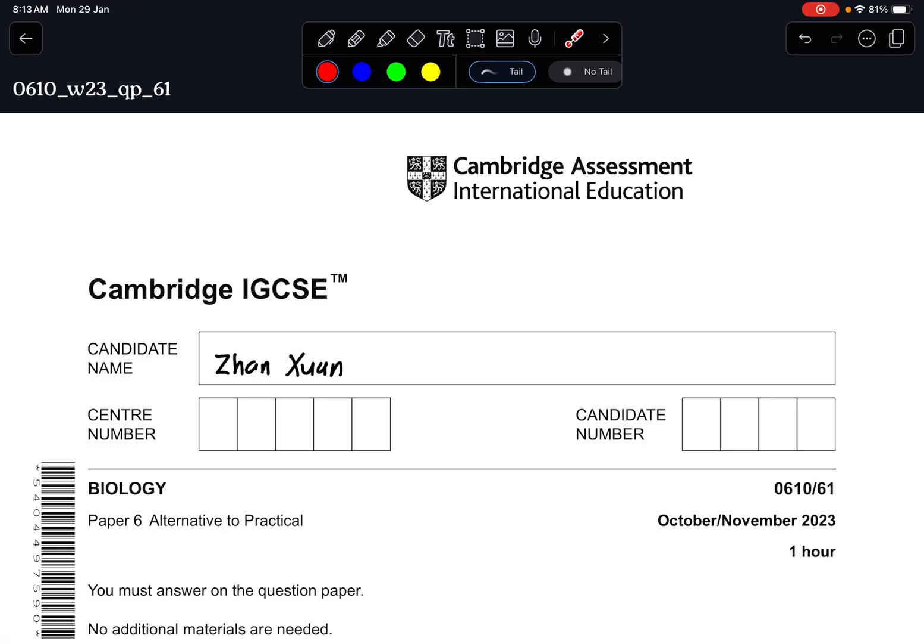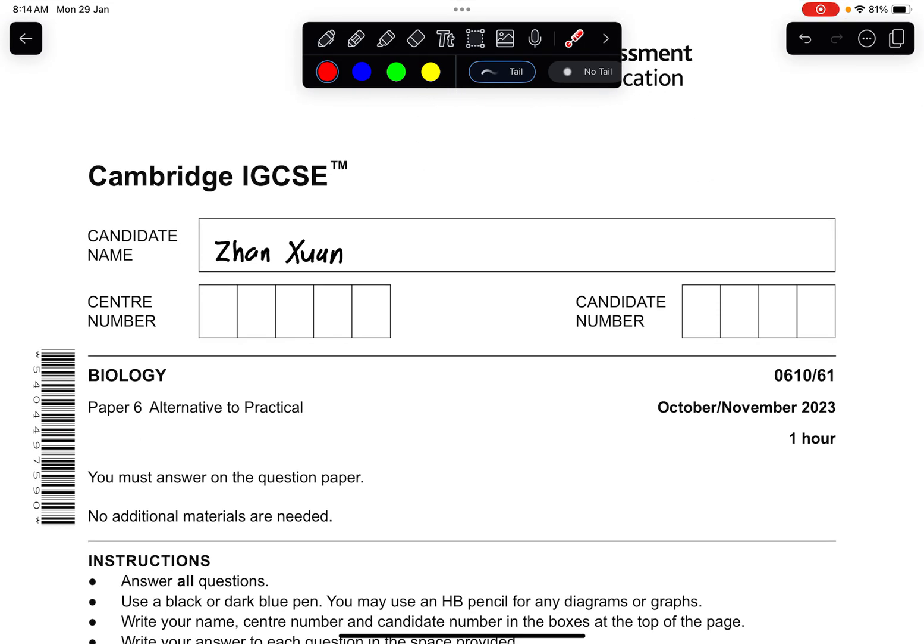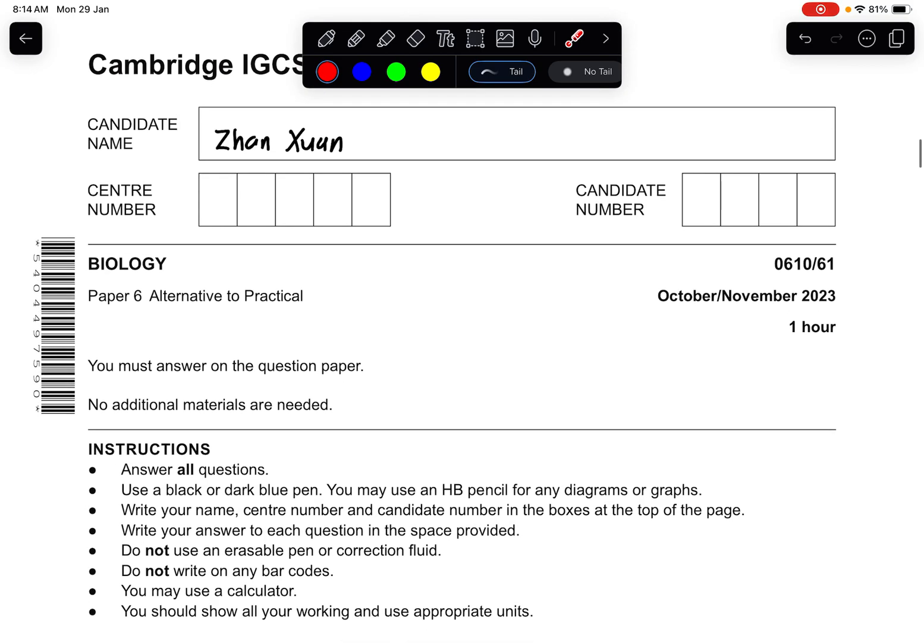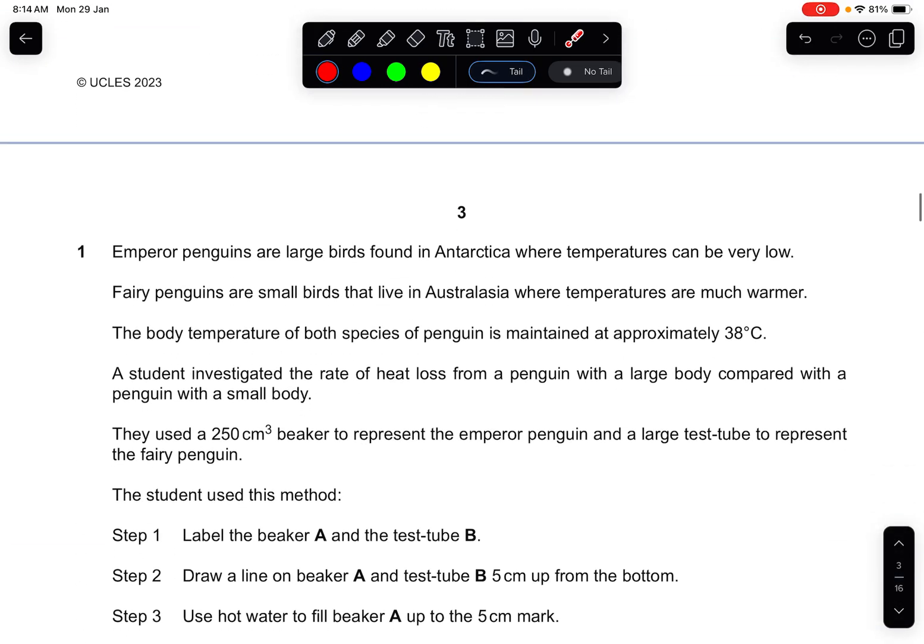Hey guys, welcome back to a new biology revision video. Today we are going to attempt the Cambridge IGCSE biology paper 6 alternative to practical, the October November 2023 series paper 6 variant 1. If there are any questions you can post in the comment section and I will answer as soon as possible.